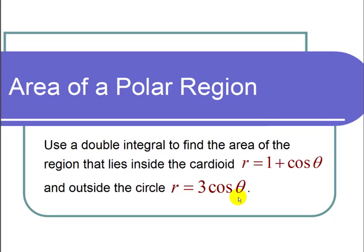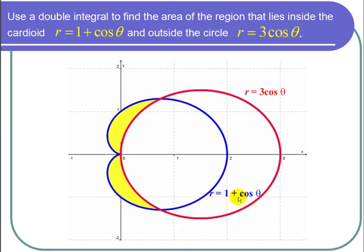So let's start by sketching a picture. Here's my picture. We have the cardioid here, 1 plus cosine of theta, and then we have the circle r equals 3 cosine of theta.